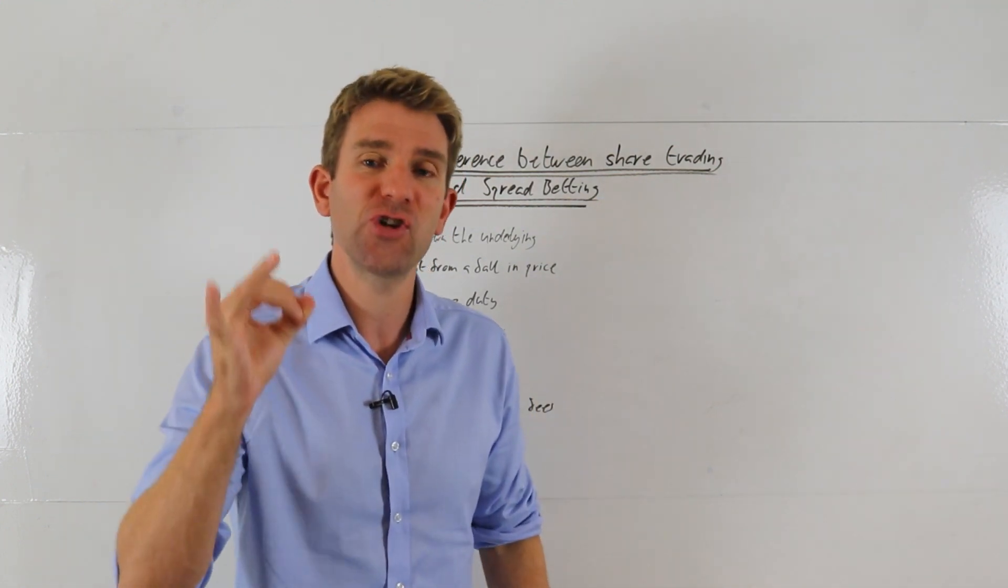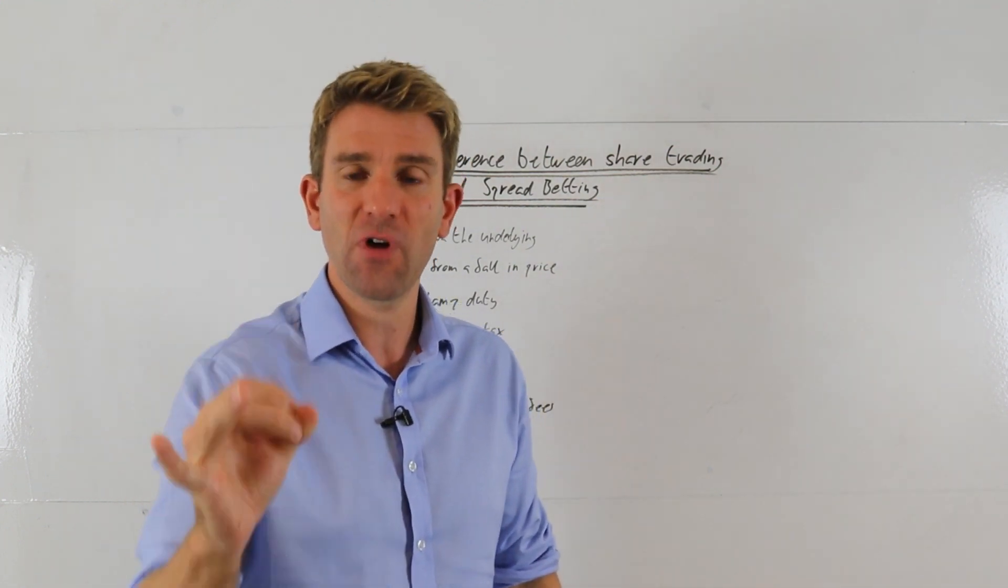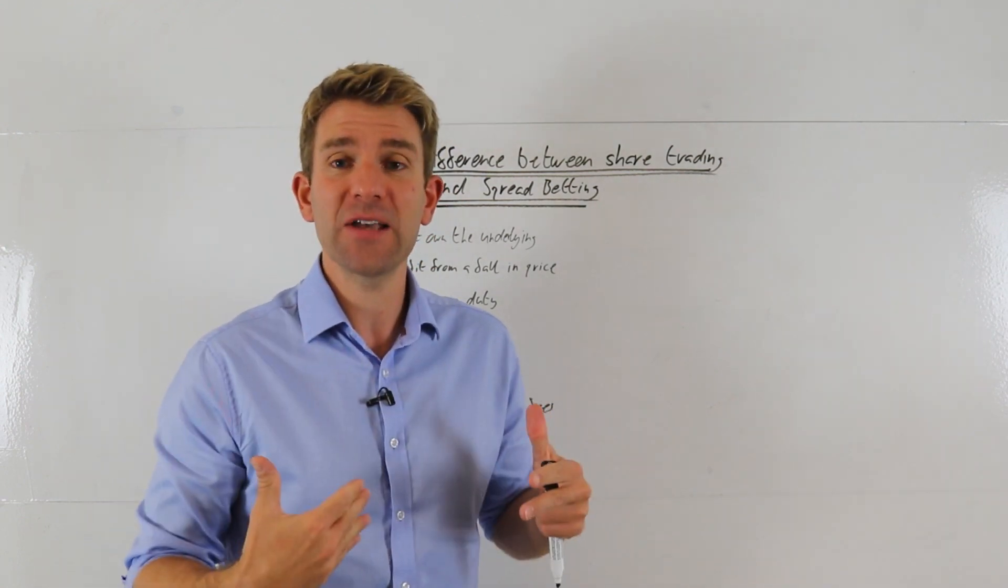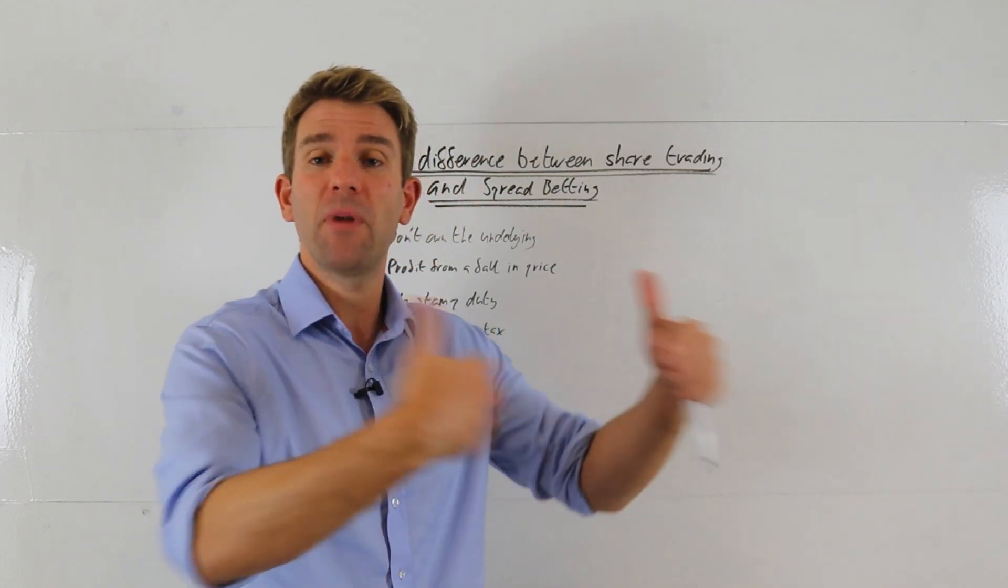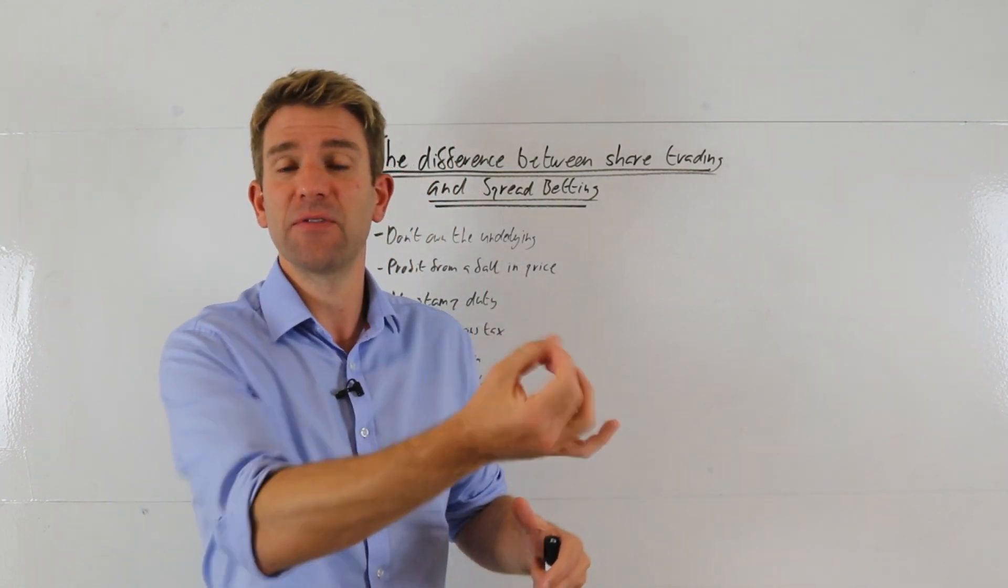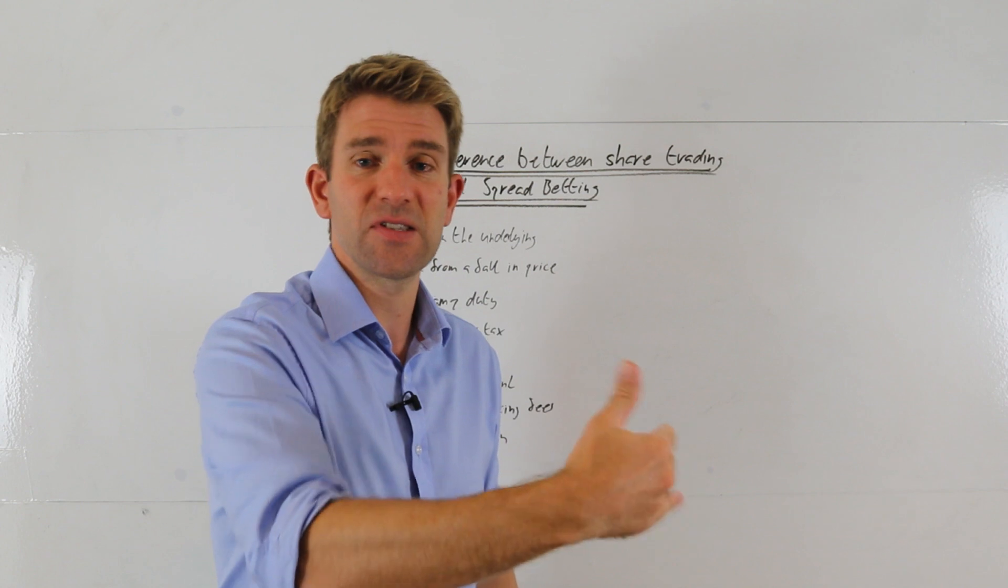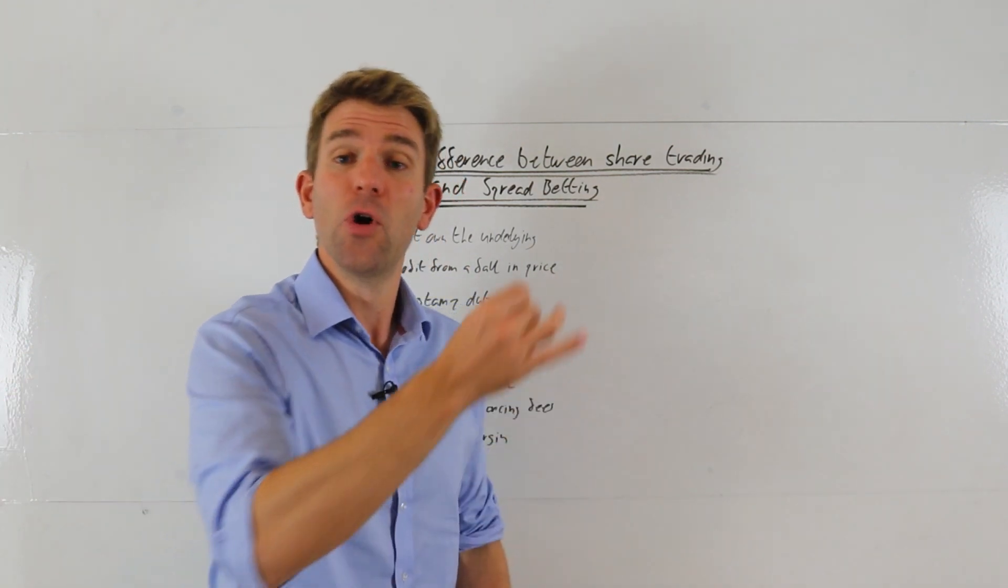Now with spread betting, we don't actually own the underlying. All we're actually doing is betting on the direction of that share price. So for example with BP, we own the underlying asset. If the asset increases in value, the share price goes up, great. We make money when we sell that asset.